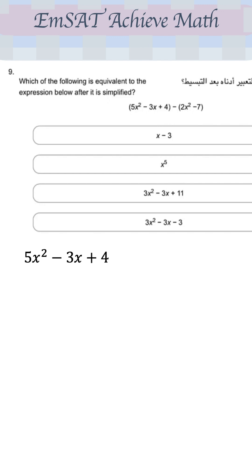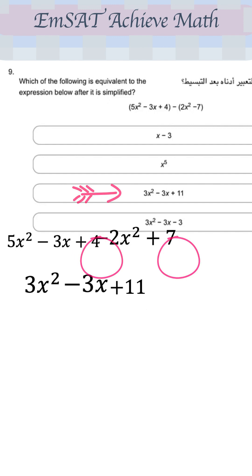To remove the brackets, we have to take care of the minus sign. So we have to multiply it by all the signs inside the bracket. It becomes minus 2X squared. Minus of minus 7 is plus 7. Now we look at the similar terms. We have 5X squared minus 2X squared, it becomes 3X squared. Minus 3X is alone. We leave it minus 3X. And then 4 plus 7 gives you 11. And this is the correct choice.